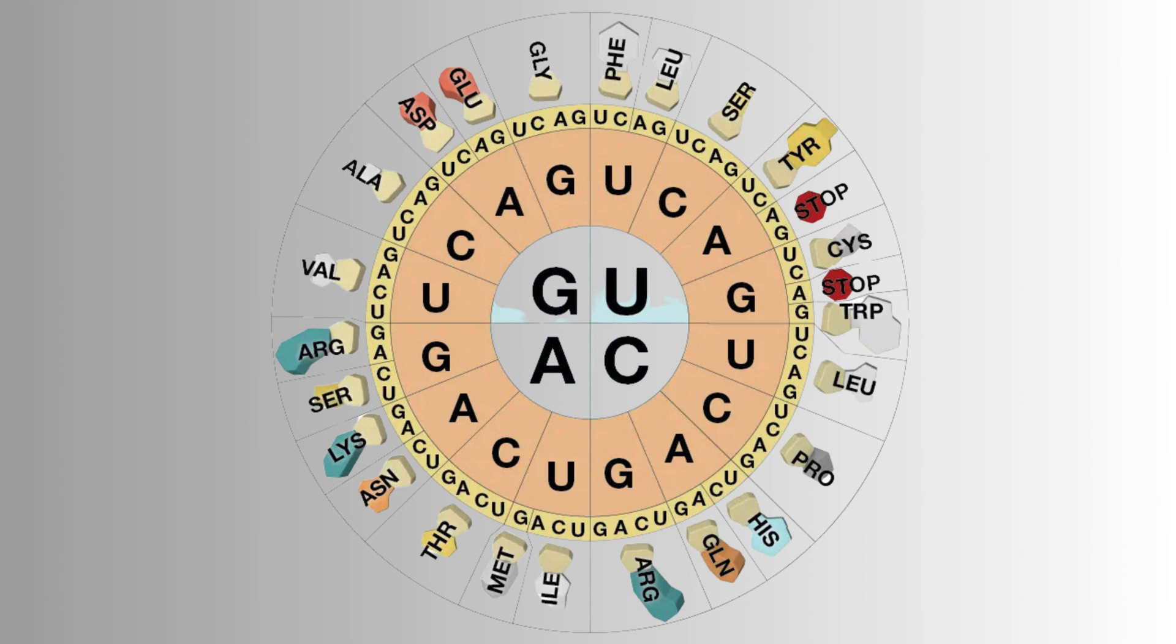Genetic information is crucial because it determines which proteins a cell produces, thereby defining its function. It ensures the stability of hereditary information while also allowing for mutations, which can lead to evolutionary changes or genetic disorders.